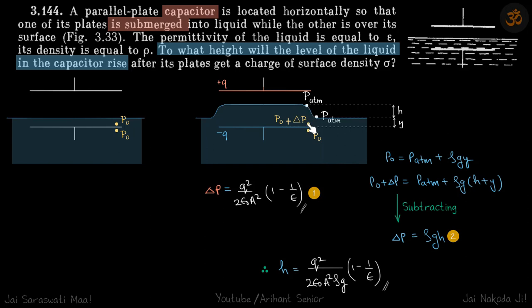Initially let the liquid height above the bottom plate be y; it then rises by h, so we need to find h. The pressure at the bottom of the liquid column inside the capacitor: p_atm + ρg(h + y) = p0 + delta_p. Since p0 outside the capacitor equals p_atm + ρgy, subtracting gives delta_p = ρgh. Since delta_p is already known, we directly get h = delta_p/(ρg).